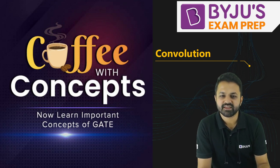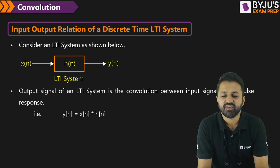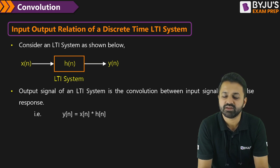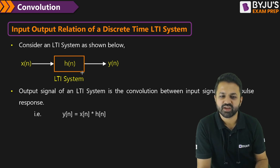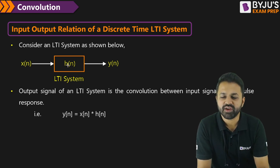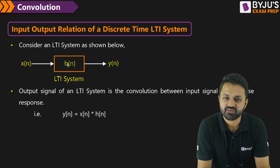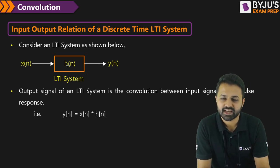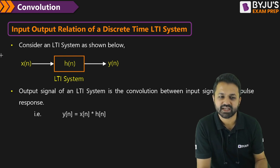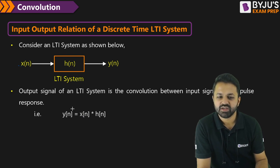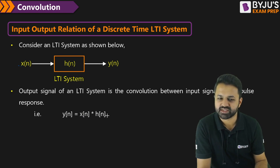Let's start the session with a brief introduction. Whenever we have an LTI system, if we give input to that system then we get the output as y of n. How do we get this y of n? It is nothing but the convolution of the input and the impulse response of the system, if we're talking about a discrete or digital signal. So x of n is a discrete signal and we are talking about the discrete time LTI system, so the output is given as the convolution between the input and the impulse response of the system.